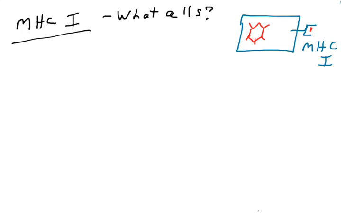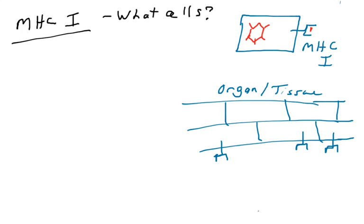So most cells in your body have MHC1. That means right now in the cells in your tissue and your organs, whether your skin cells, epithelial cells, liver cells, or kidney cells, all your cells have these MHC1 complexes on their surface.